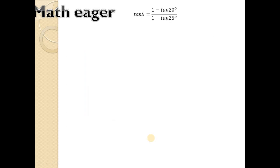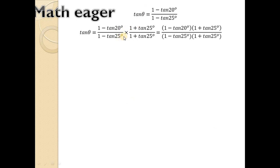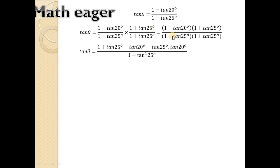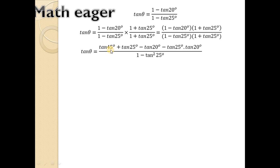We have tan theta equals (1 minus tan20°) divided by (1 minus tan25°). To rationalize, we multiply numerator and denominator by the same factor (1 plus tan25°). Then we get 1·(1 plus tan25°) minus tan20°·(1 plus tan25°) in the numerator, and (1 minus tan25°)·(1 plus tan25°) in the denominator.